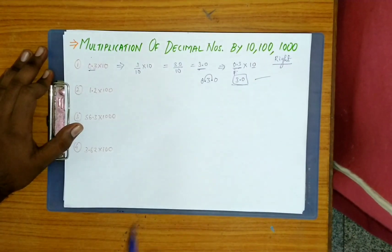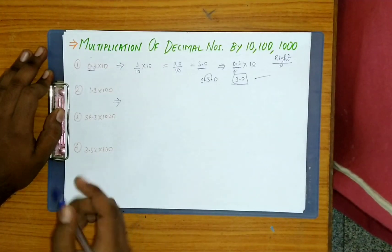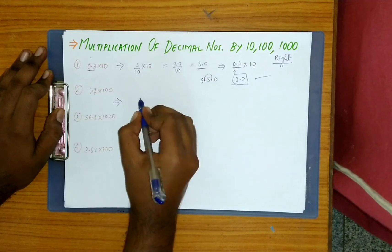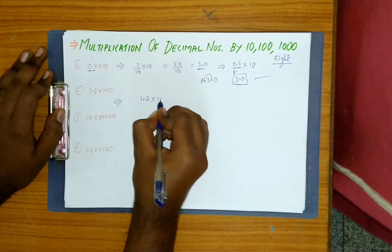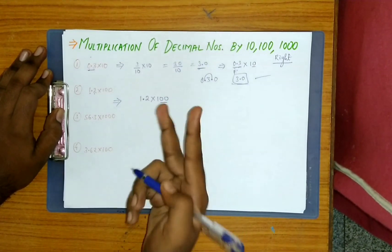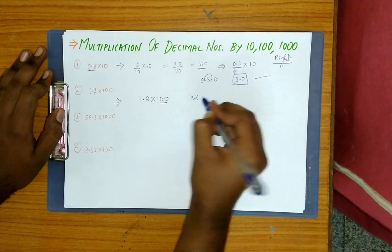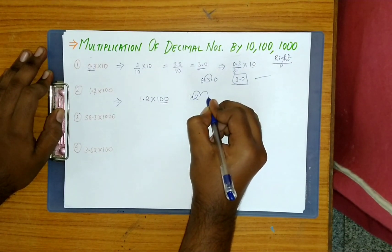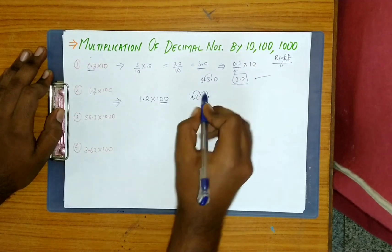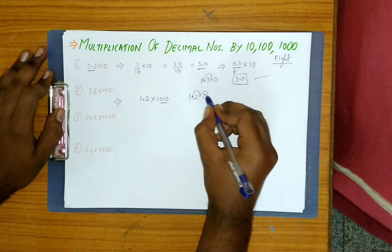Let us go to the second example. 1.2 into 100. Hundred contains two zeros, so jump two times: one, two. Point reaches here. Put zeros in the gap, so you'll get 120.0.